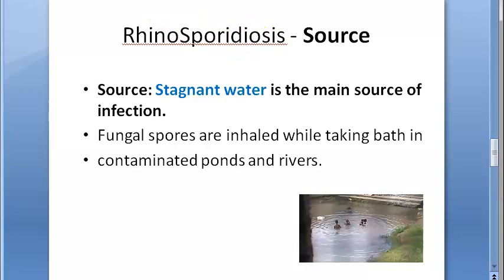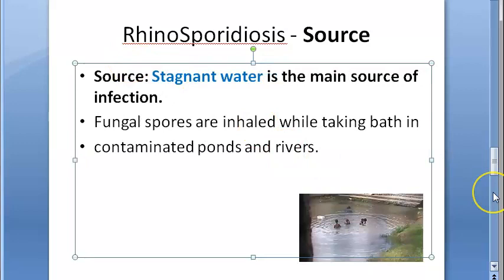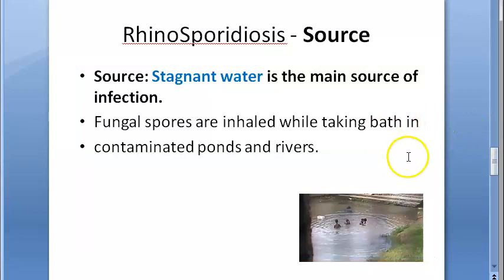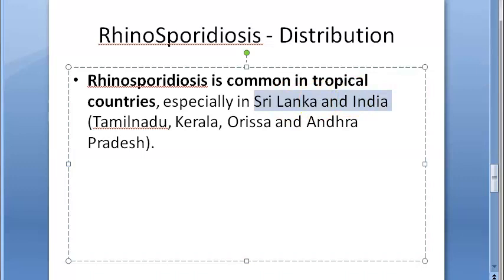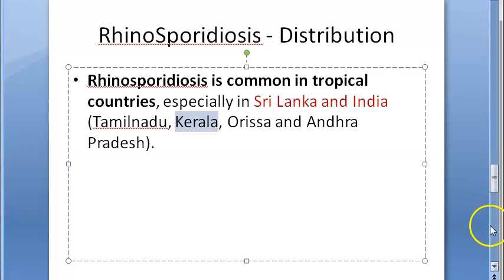The main source of infection is stagnant water. People who bathe in contaminated ponds and rivers are prone to rhinosporidiosis. It is very common in Sri Lanka and India, particularly in Tamil Nadu, Kerala, Orissa, and Andhra Pradesh.